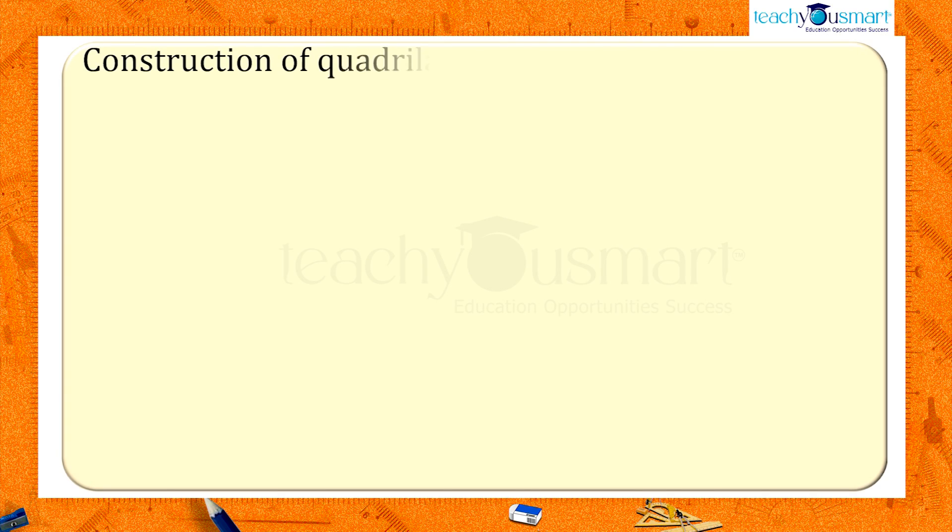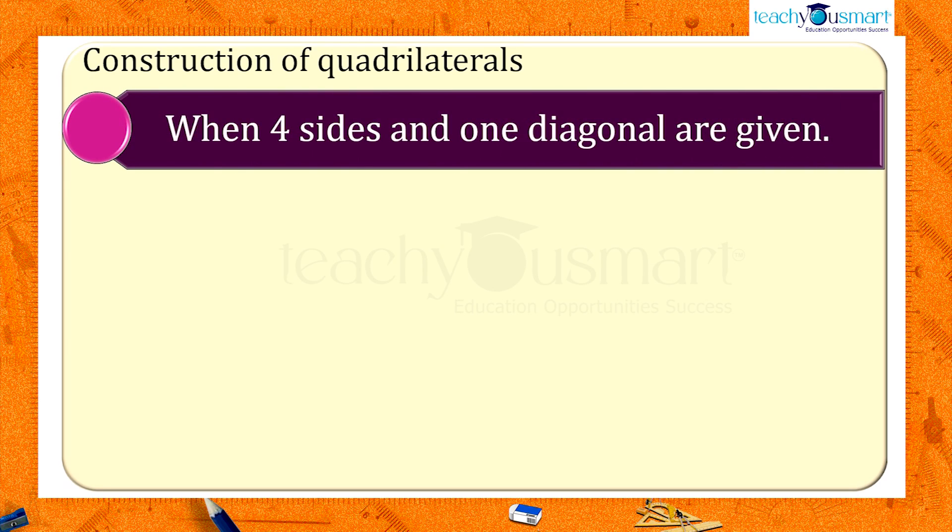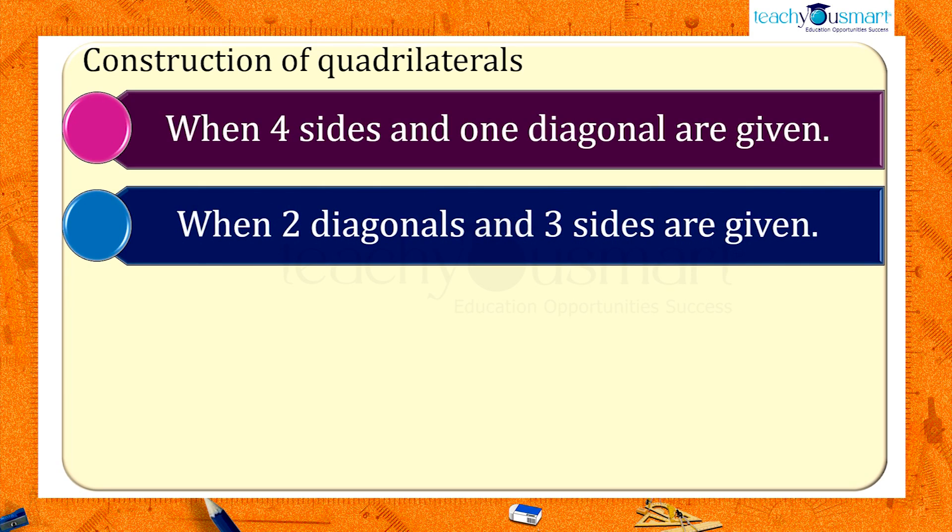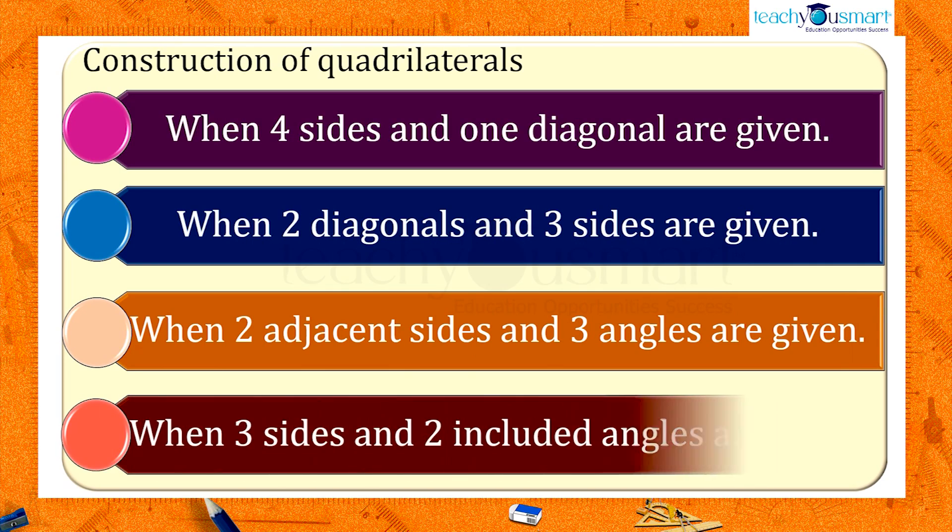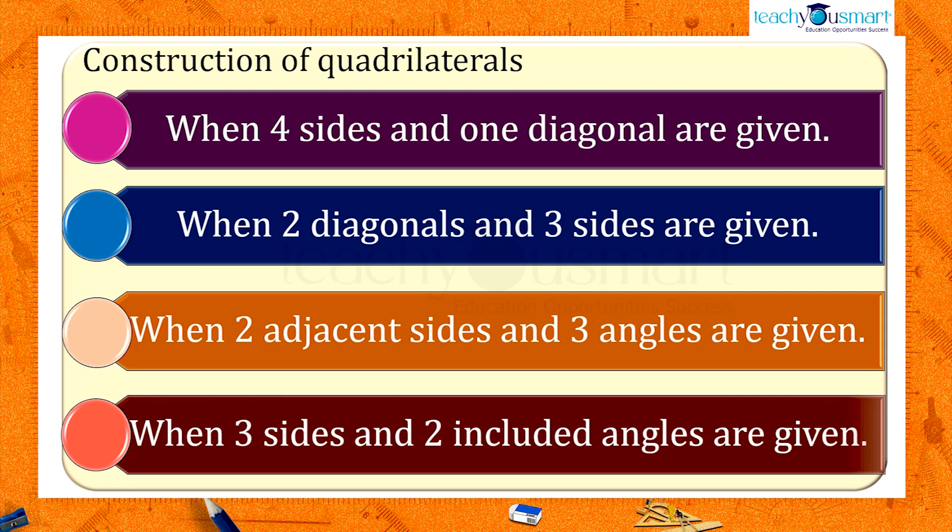In the previous sections, we discussed the construction of quadrilaterals when five measurements are given. That is, when four sides and one diagonal are given, when two diagonals and three sides are given, when two adjacent sides and three angles are given, and when three sides and two included angles are given.